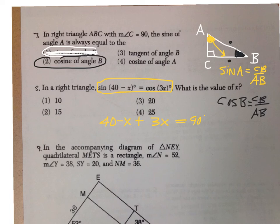But if you worked on it this other way, you would get 40 plus 2x equals 90. Subtract 40 from both sides and you get 2x equals 50. Divide by 2 and x equals 25.